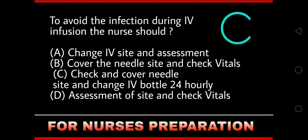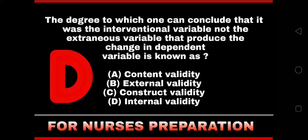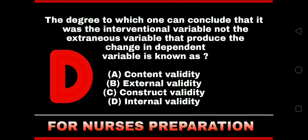Next: The degree to which one can conclude that it was the interventional variable, not the extraneous variable, that produced the change in dependent variables is known as — Content Validity, External Validity, Construct Validity, or Internal Validity. The right answer is Option D: Internal Validity.